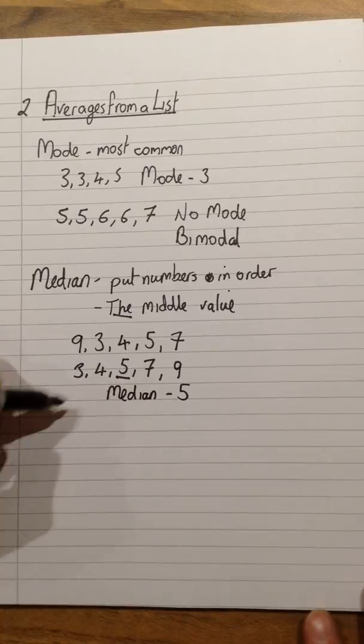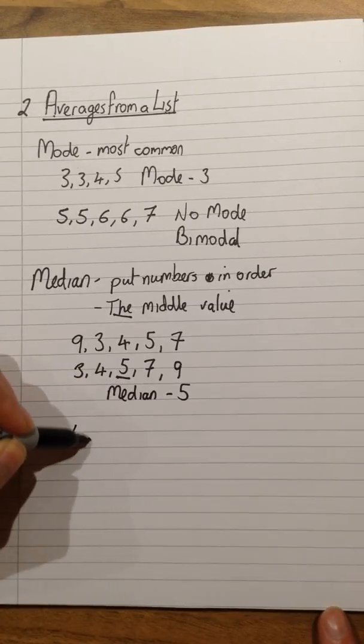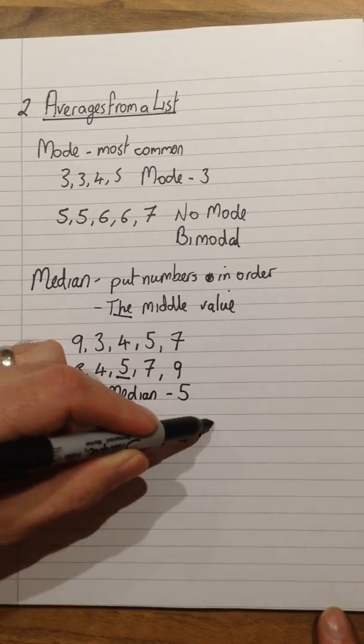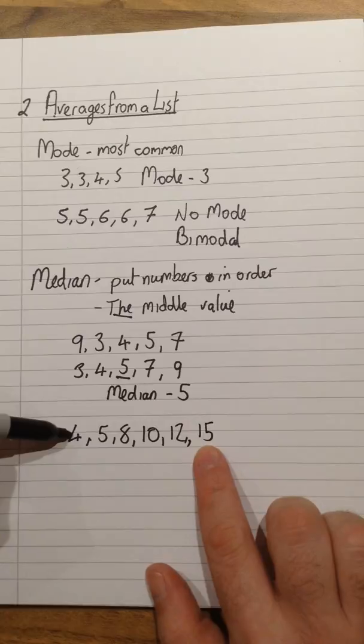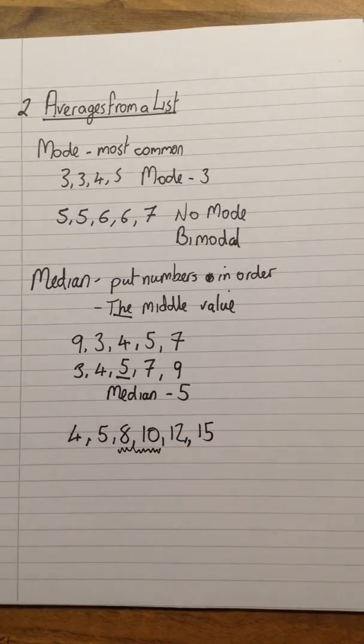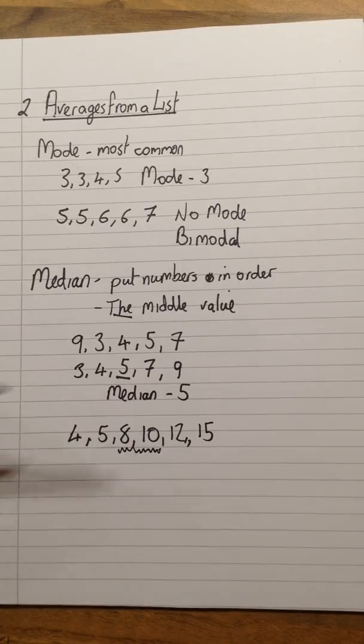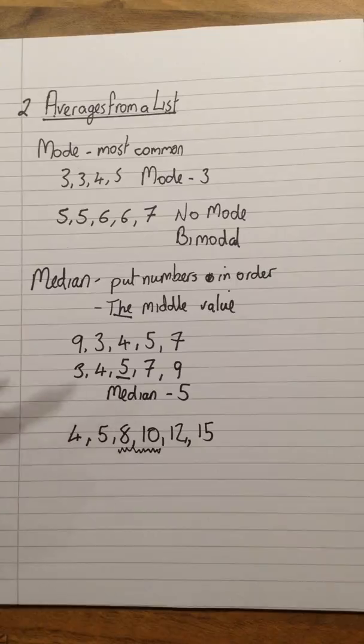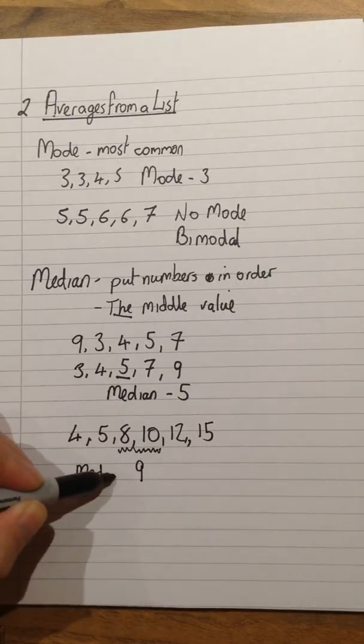Where this becomes a little bit trickier is when you've got more than one number that appear in the middle. So for instance, here is a list that I have already put in order. If I was looking for the median here, again using the same method, I'd count in and here we actually find that there are two numbers in the middle of this question. In order to find the median, what I would need to do is find what is halfway between those two. This one's pretty obvious, halfway between 8 and 10 is 9. So we would say that the median is 9.